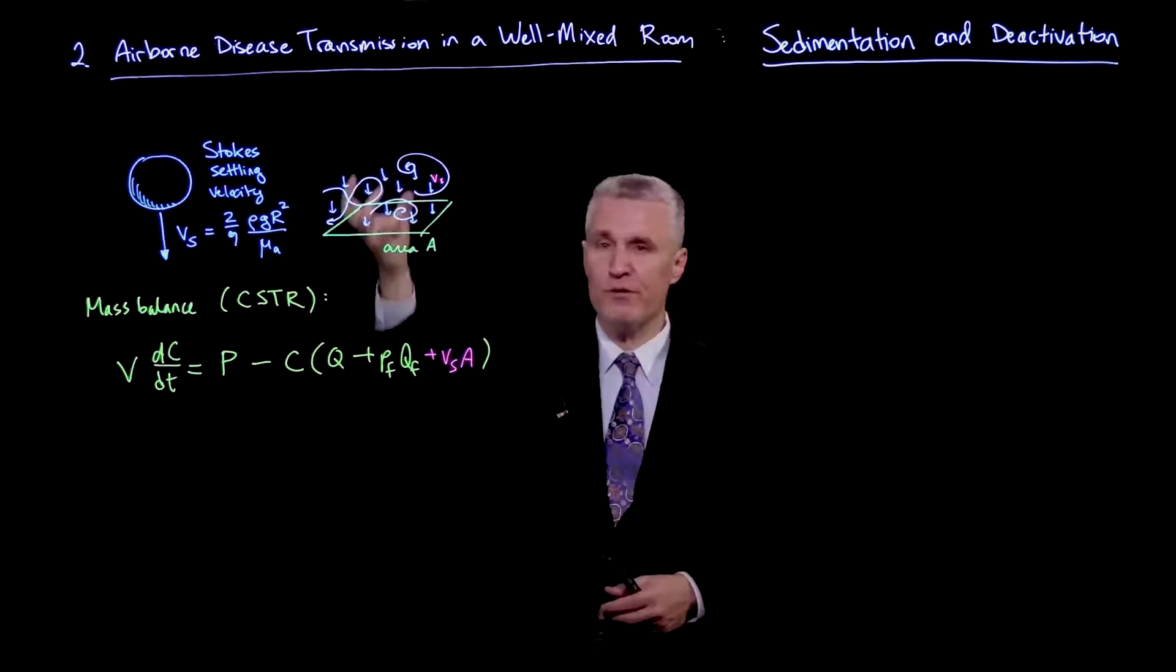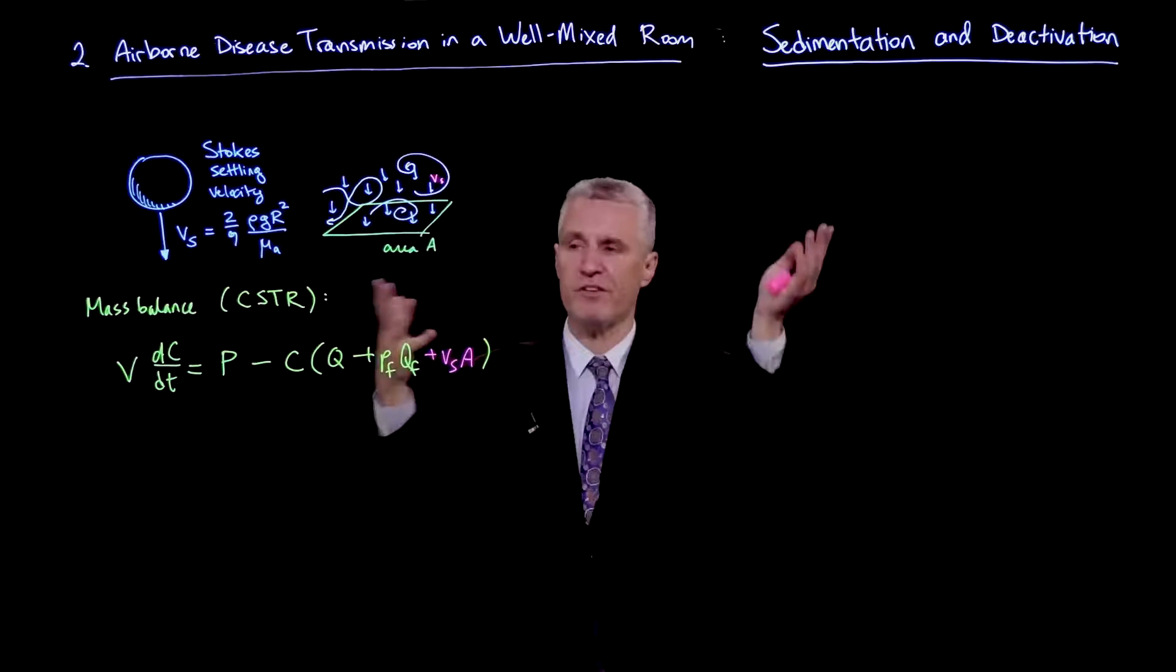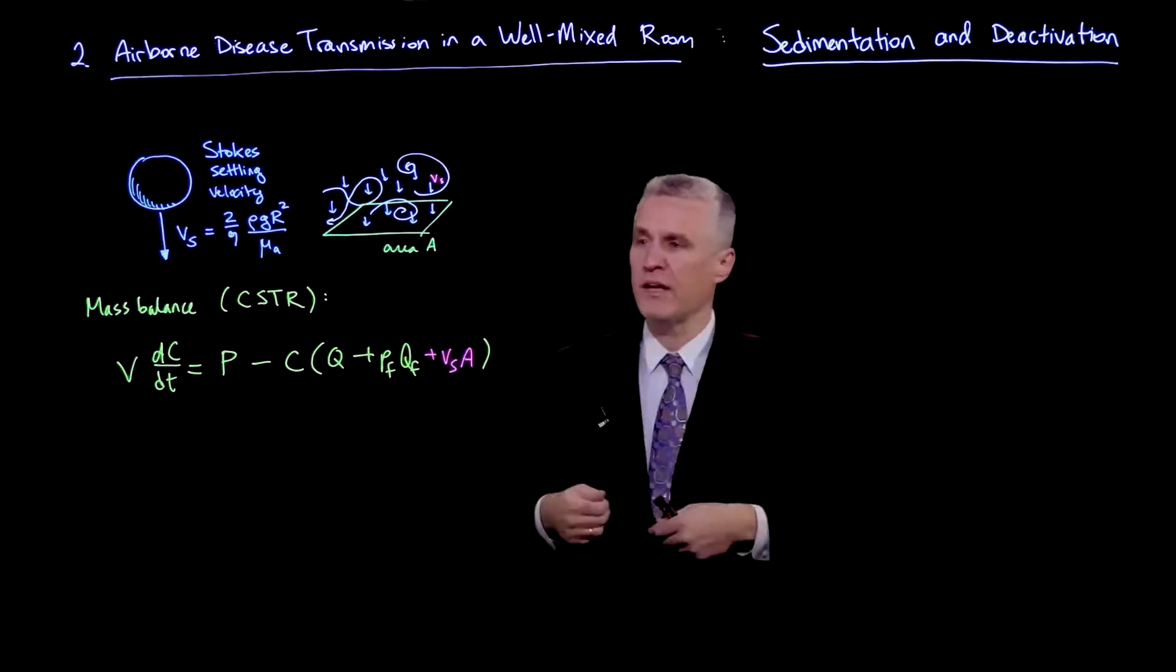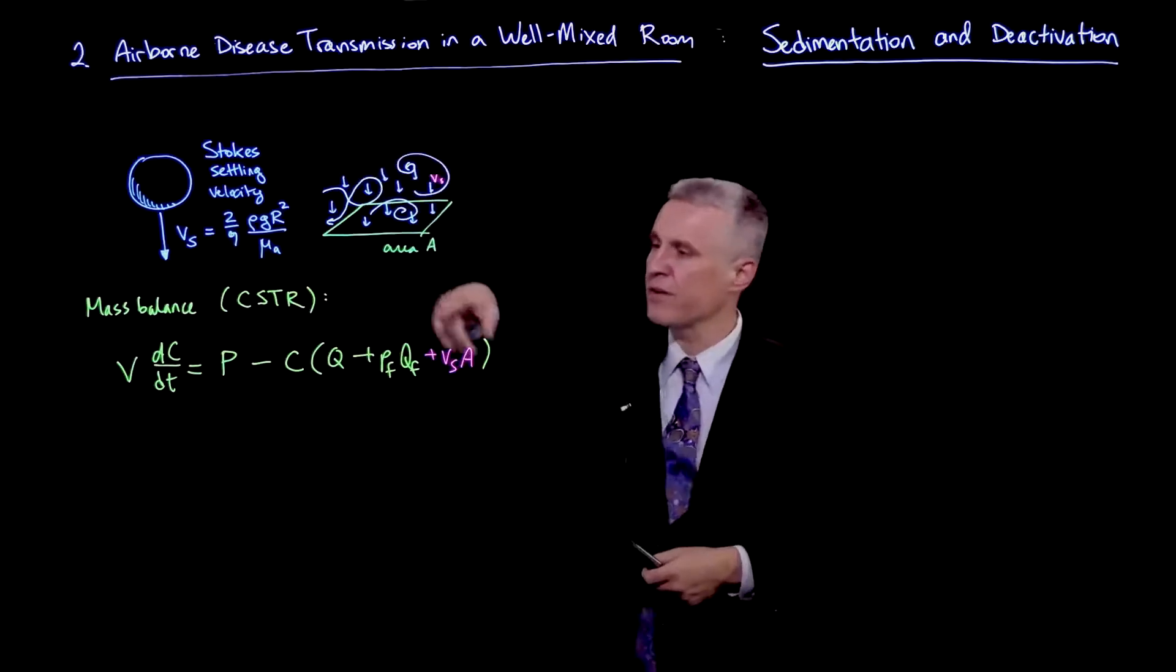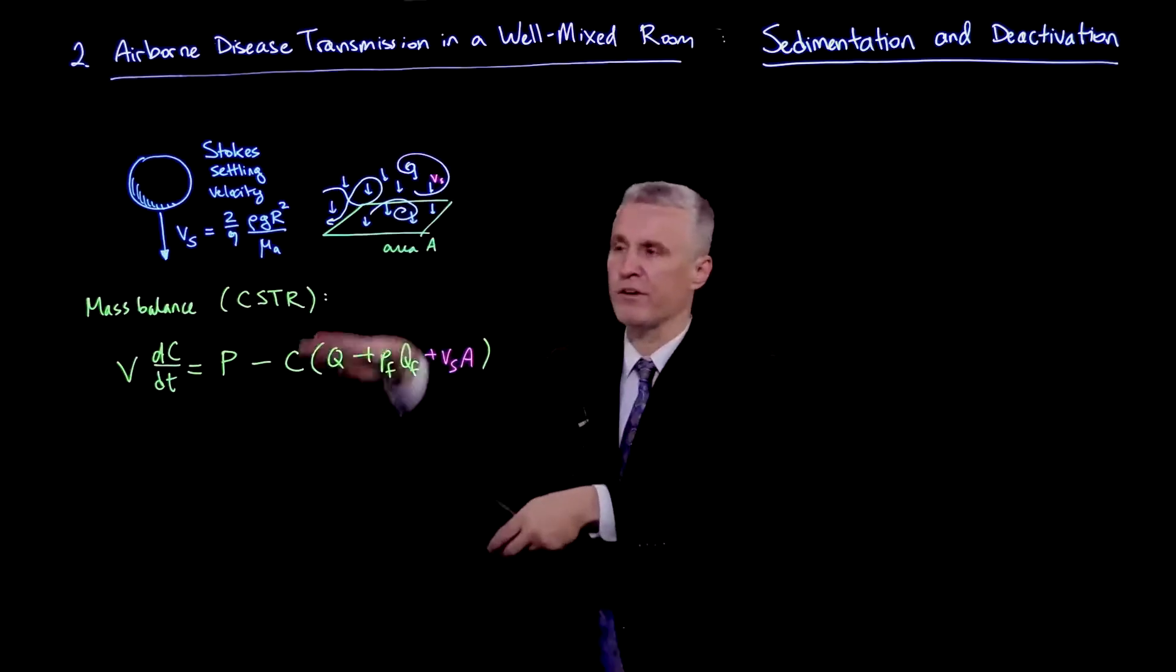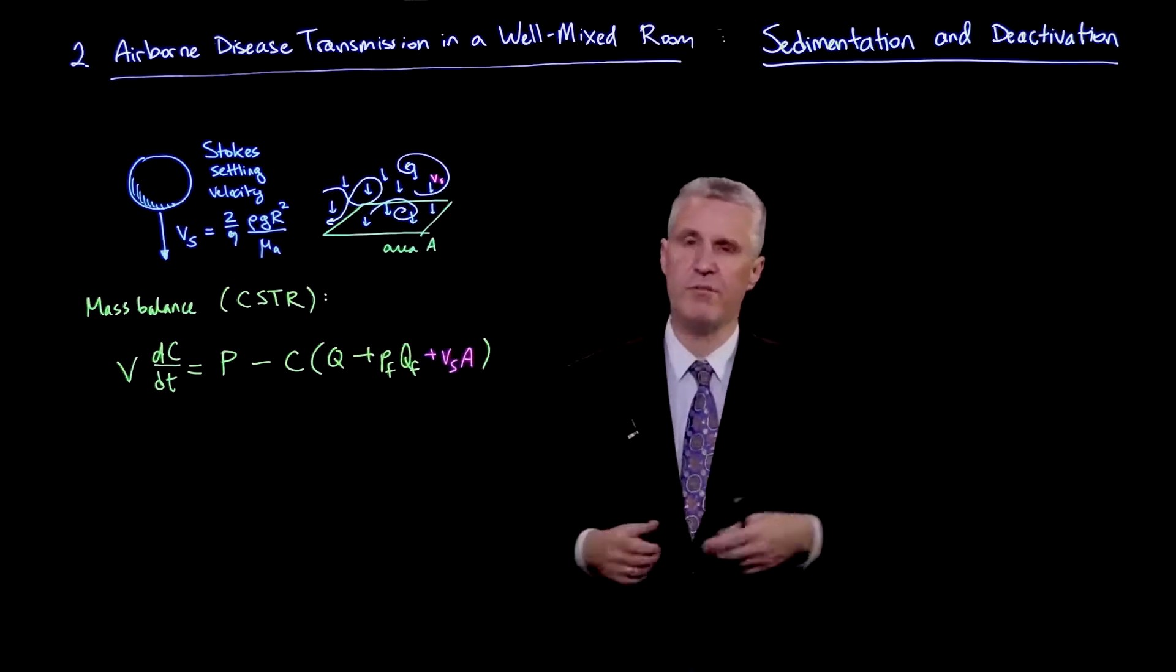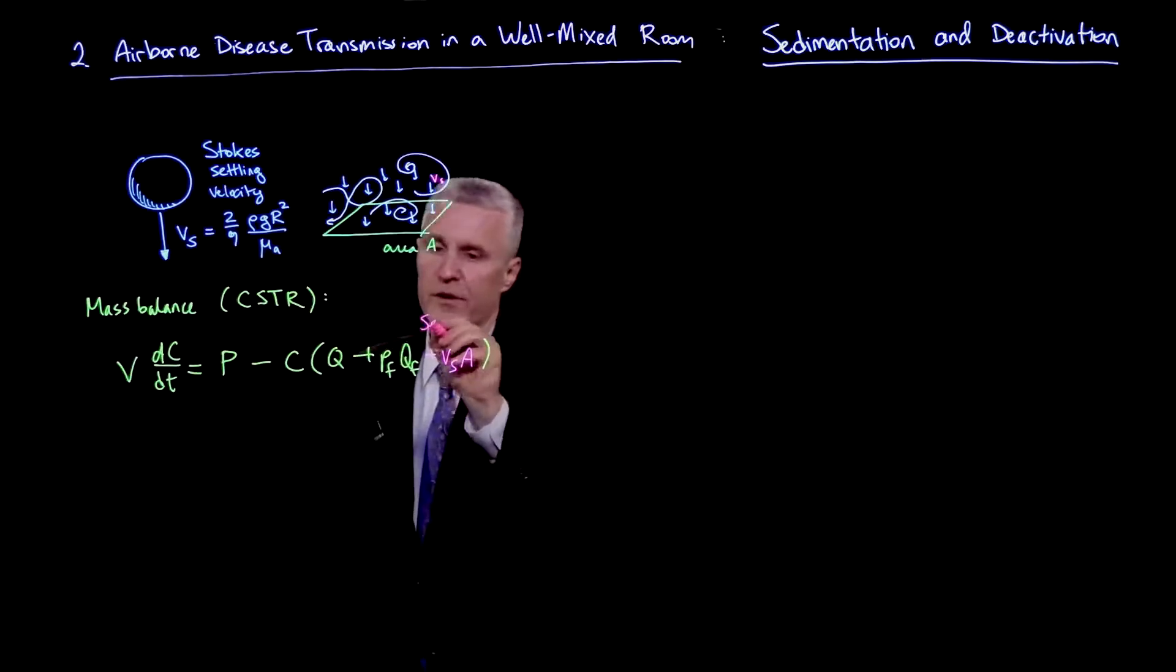But on average, the particles go down just as much as they go up. And if it's well-mixed, then the particles essentially are sampling the whole space. And relative to that well-mixed flow, which kind of averages to zero, they are slowly settling. And so a reasonable approximation is to say the removal is basically happening with a flux rate, which is that velocity of falling times the area.